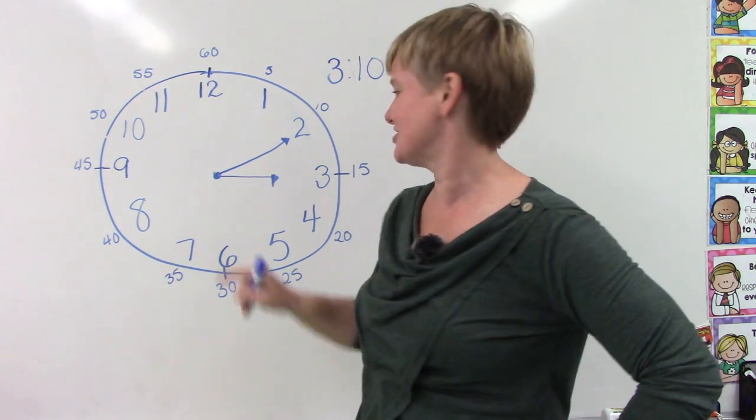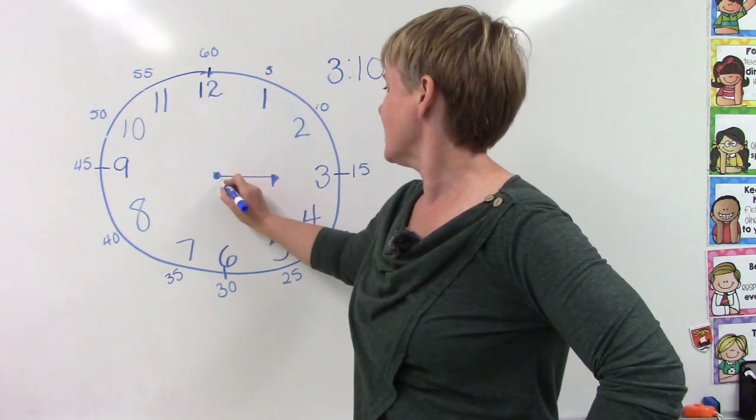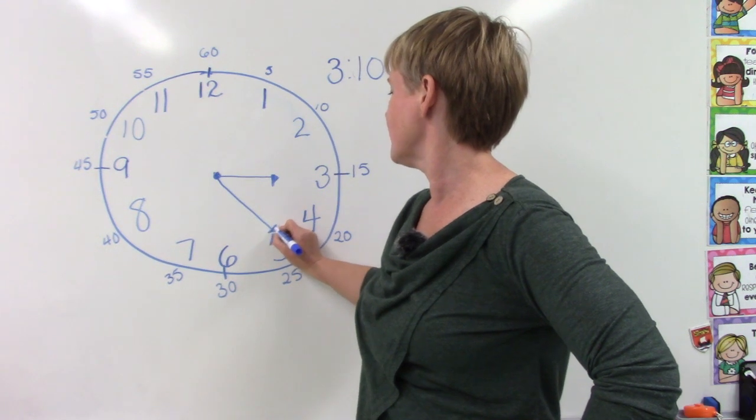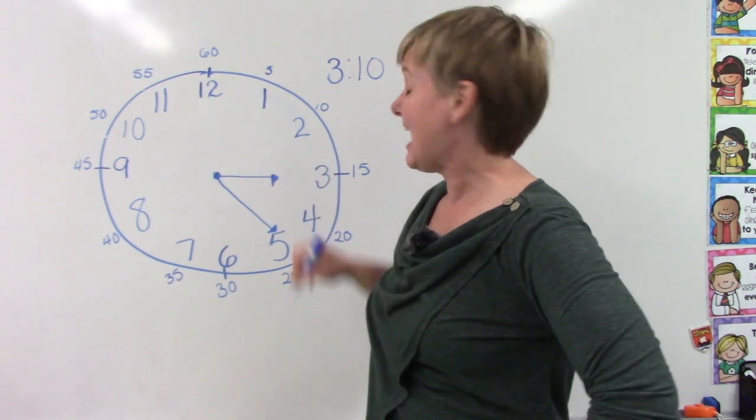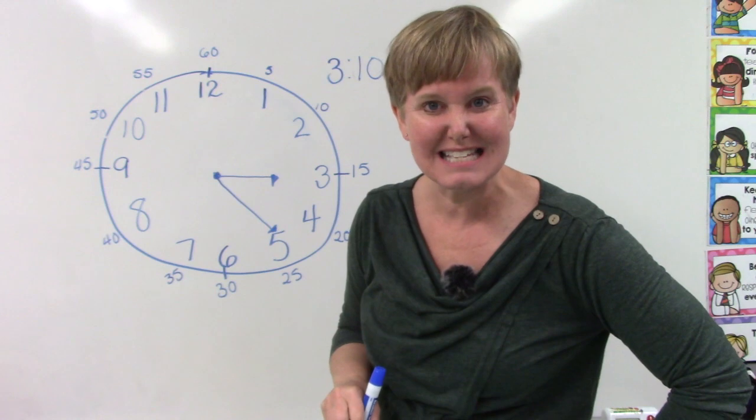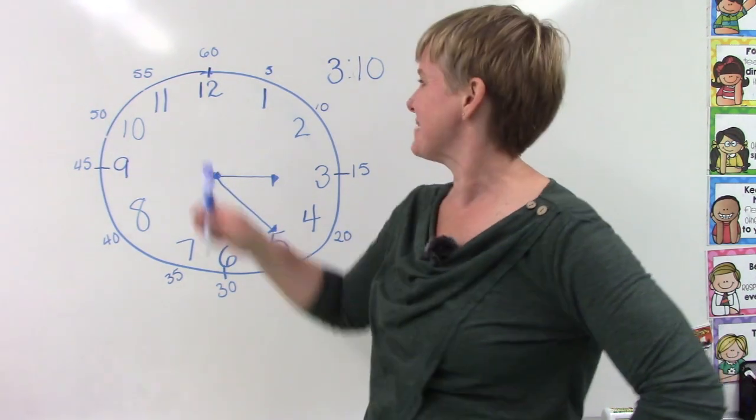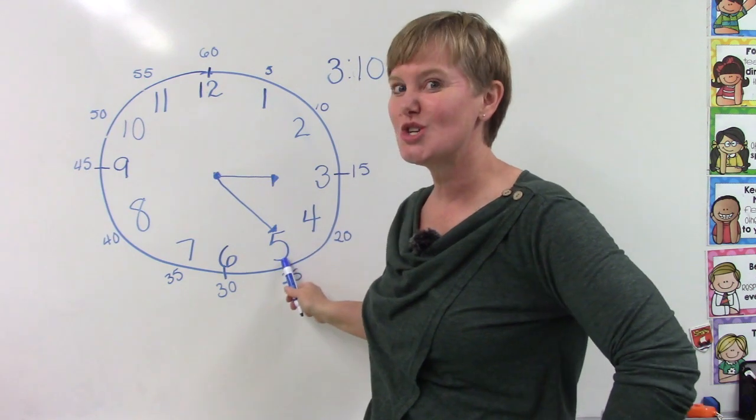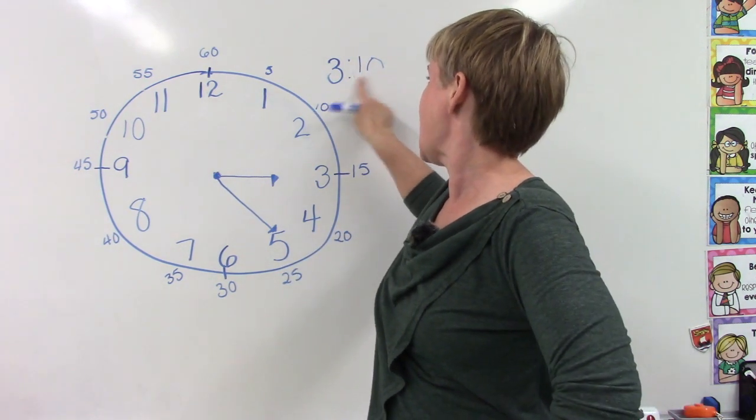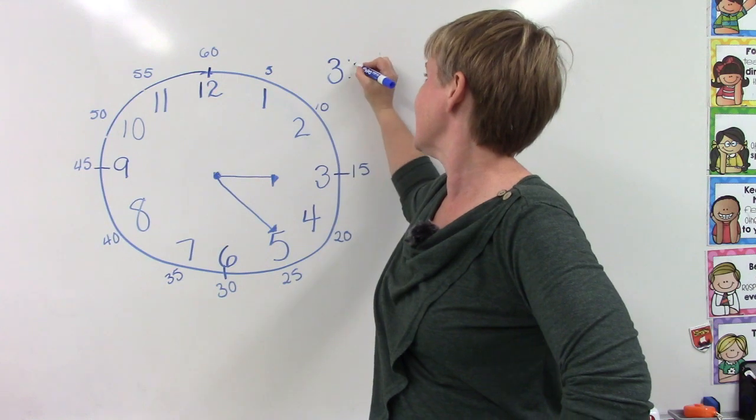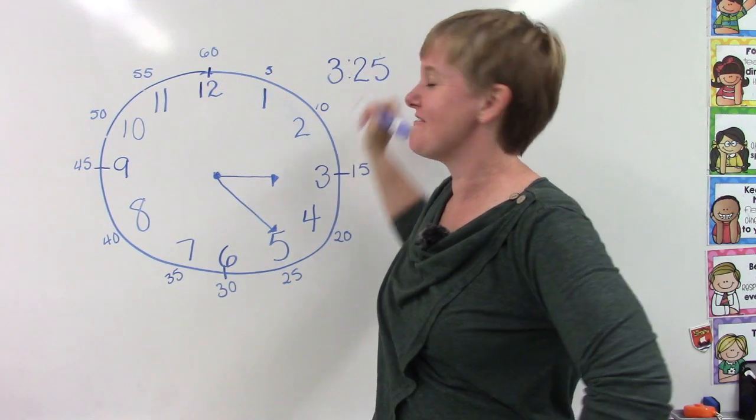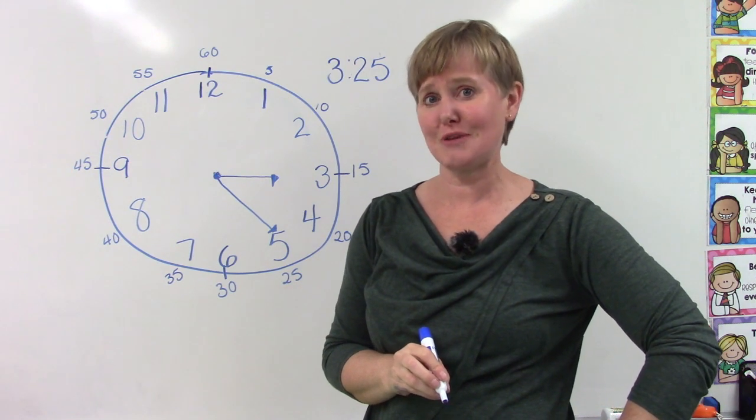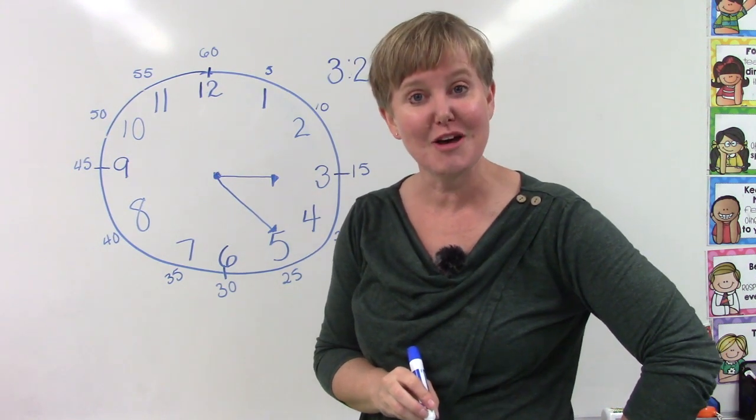I'm going to change our minute hand again. I am going to point the minute hand all the way down here to the 5. How many minutes past 3 is it now? Count with me. 5, 10, 15, 20, 25 minutes. So instead of being 10 minutes after 3, it is 25 minutes after 3. That is so close to half past 3.